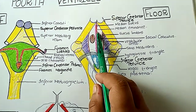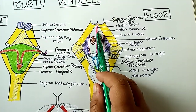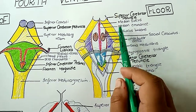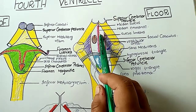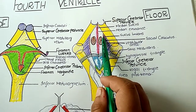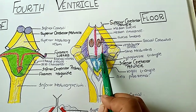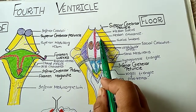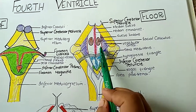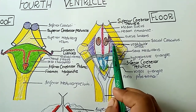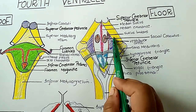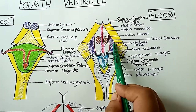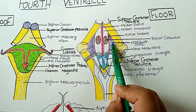Lateral to the median sulcus is a slight elevation known as the medial eminence. Further lateral to the medial eminence is the sulcus limitans. Lateral to the sulcus limitans is the vestibular area, where the vestibular nucleus is present.